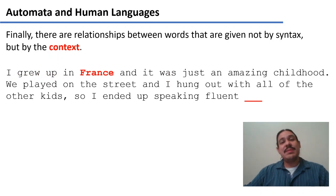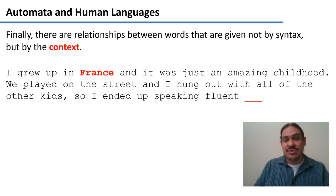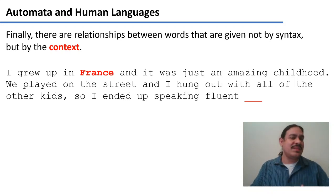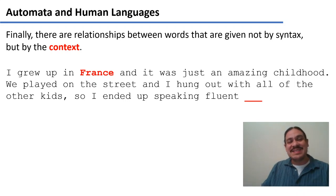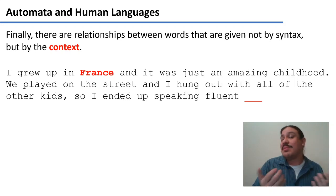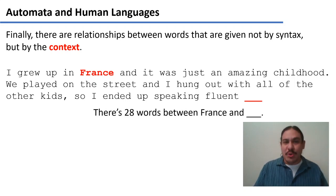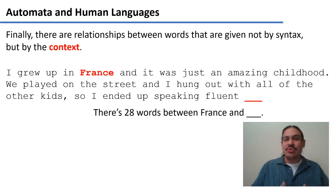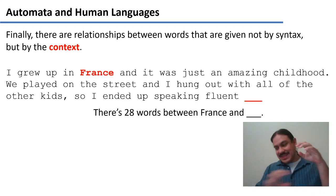Long-distance dependencies can also arise from context. For example: 'I grew up in France, and it was just an amazing childhood. We played on the street, and I hung out with all the other kids. So I ended up speaking fluent...' — and you can fill in 'French.' You knew because of something said 28 words before. Somehow you stored information from 28 words earlier and used it further down the line.